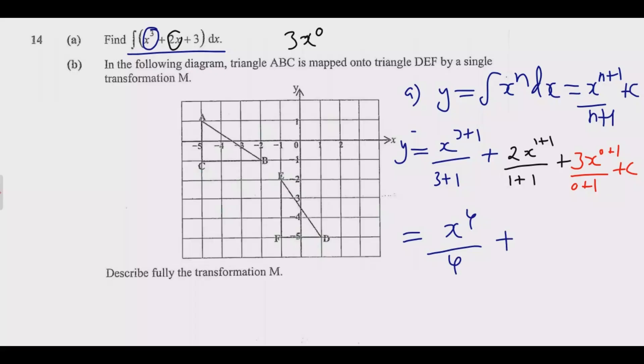We are going to have 1 plus 1 is 2, so we are going to have 2x to the power 2 over 2, then plus we are going to have 3x because 0 plus 1 is 1, so it will be x to the power 1 over 1 plus c.